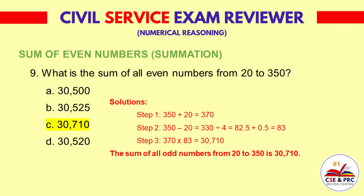Step 3: 370 times 83 is equal to 30,710. The sum of all even numbers from 20 to 350 is 30,710.